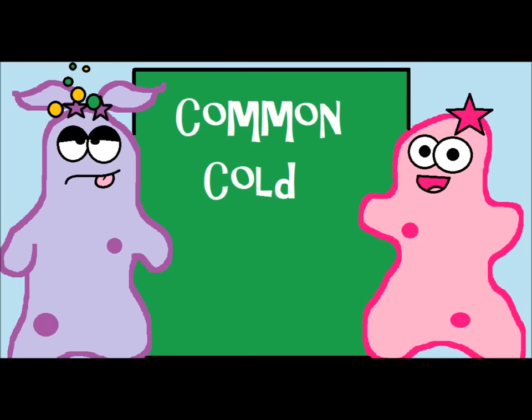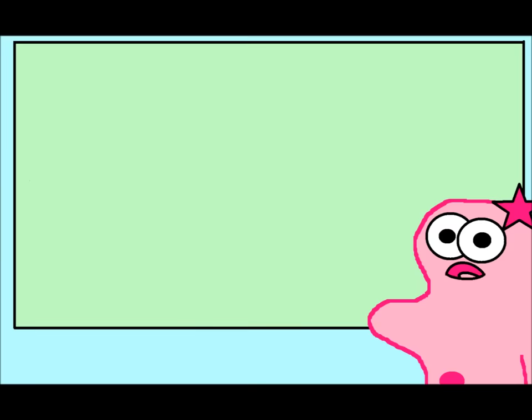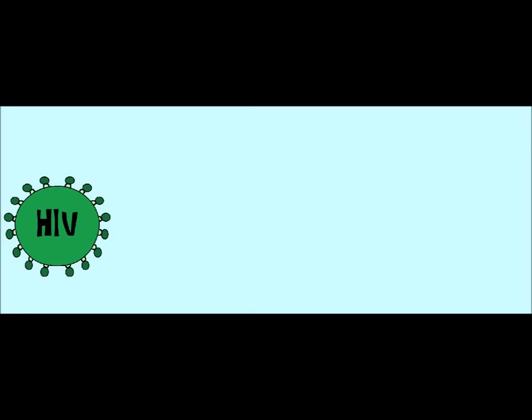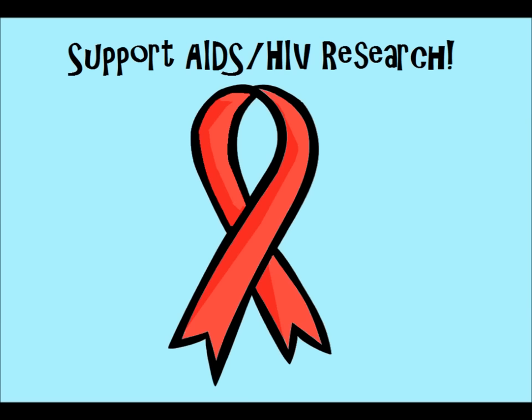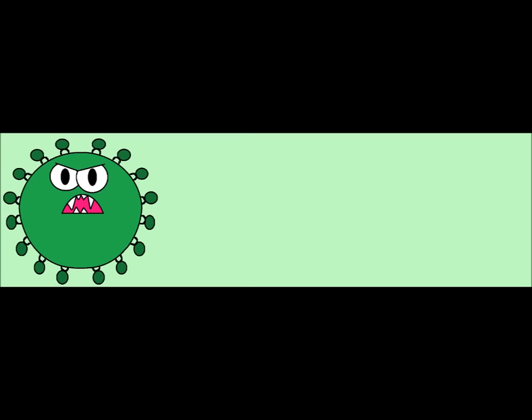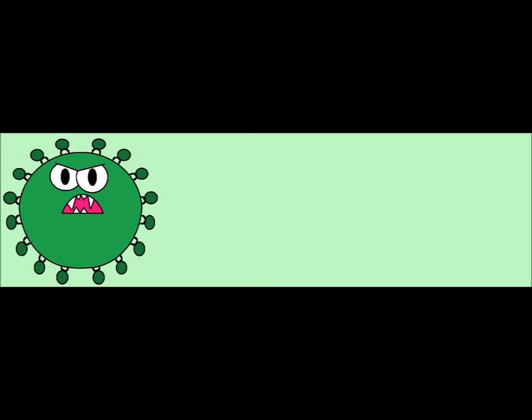Going back to the cold — which again is typically caused by a virus — a lot of times it just has to run its course and your immune system will take care of it. But some viruses are extremely complicated, like HIV, the virus that can lead to AIDS. HIV targets immune cells, and by doing so it makes you very vulnerable to other infections and diseases. Someone with HIV could find the common cold to be very detrimental to their health. HIV is difficult to treat partly because it tends to mutate quickly — if medications are very selective against one specific type of virus and the virus mutates, it becomes difficult to treat.